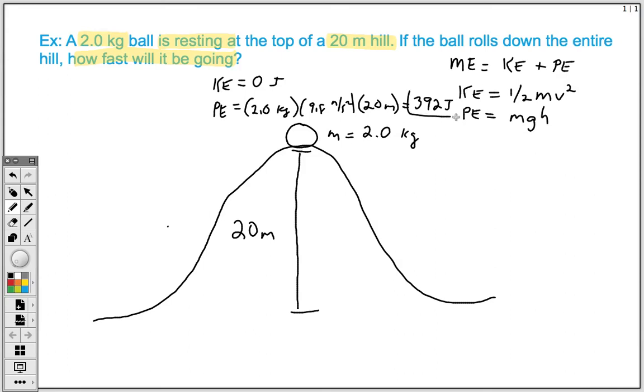So our total mechanical energy, if we add these guys up, zero plus 392 is going to be 392 joules.